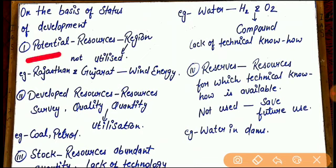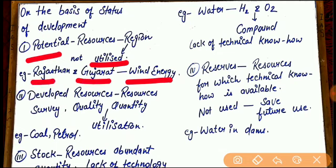The first type of resources is Potential Resources. What are called Potential Resources? The resources which are found in a particular region but not fully utilized. Like Wind Energy — this wind energy is found abundantly in Rajasthan as well as in Gujarat but not fully utilized. Such type of resources come in the category of Potential Resources.